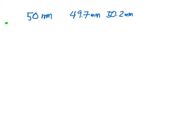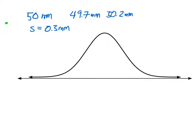If we have enough data we can calculate the standard deviation, and let's say that's 0.3 millimeters. These measurements will also form a normal distribution. We know the peak occurs at the mean, which is 50, and we can see that one standard deviation to the right is 50.3, and one standard deviation to the left of the mean is 49.7.